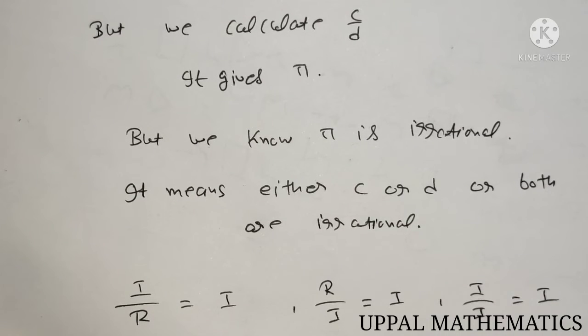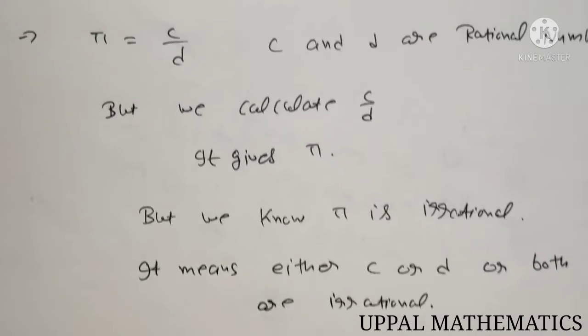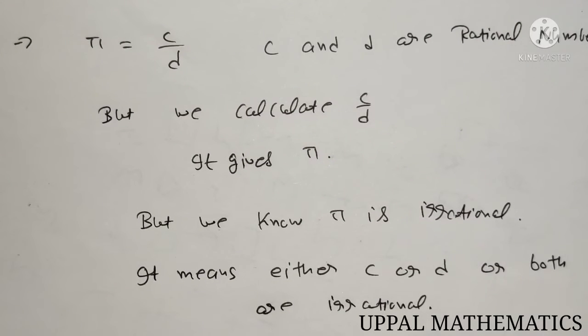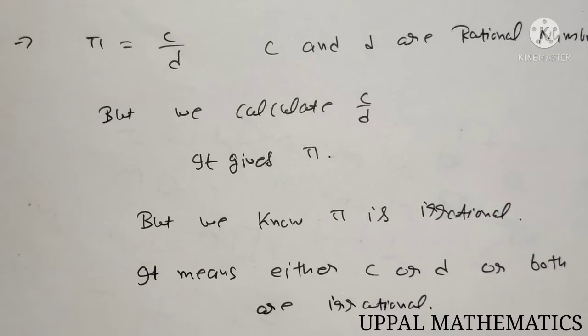So this was the contradiction. If the value of C divided by D gives pi, what does it mean? It means either C is irrational, or D is irrational, or both are irrational.